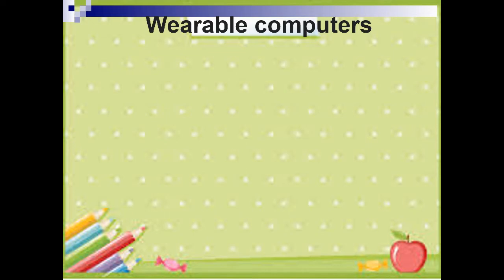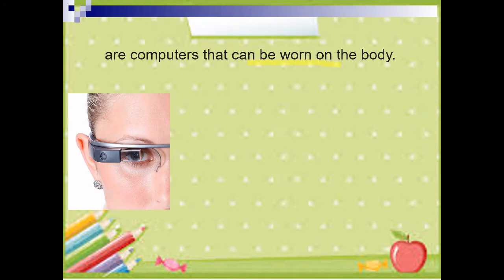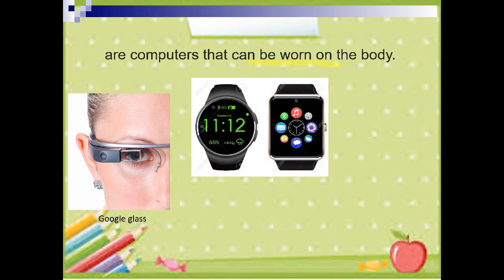Lastly, we have wearable computers. What are wearable computers? These are computers that can be worn on the body. First, we have the Google Glass. It is a wearable computer featuring a head-mounted display in the form of eyeglasses. The Google Glass functions as a hands-free smartphone, letting users access the mobile internet browser, camera, maps, calendar, and other apps via voice commands.